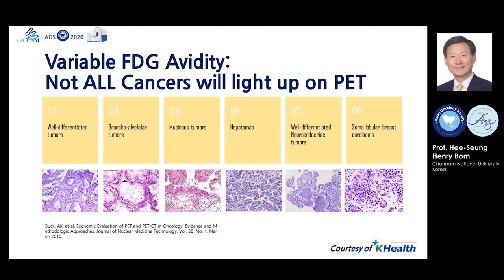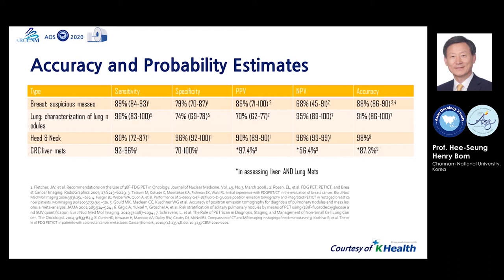This slide summarizes diagnostic accuracy of breast, lung, head and neck, and colon cancers by sensitivity, specificity, positive predictive value, negative predictive value, and accuracy. Usually, sensitivity is higher than specificity, and PPV is higher than NPV, except for lung nodule characterization.